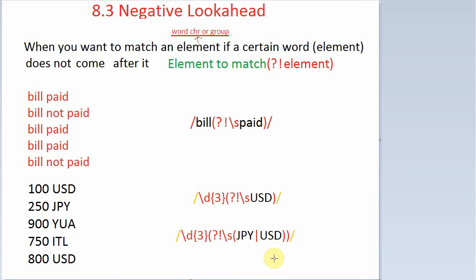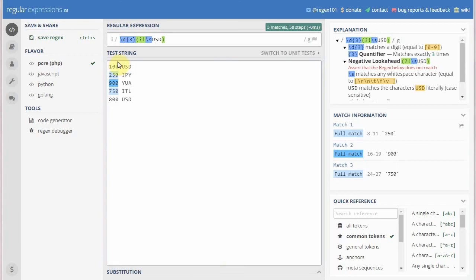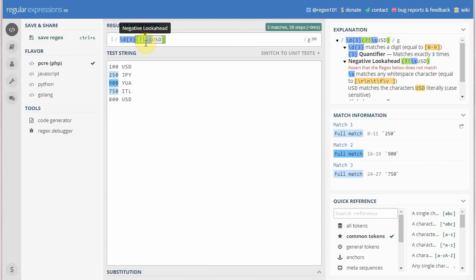This regex tells the engine: match all three-digit numbers that are not followed by 'USD' — match all three-digit numbers which don't have capital 'USD' after them. In the regex engine you can see: backslash d, quantifier three for a three-digit number, parenthesis, question mark, exclamation mark — negative lookahead — backslash s for space, and 'USD', the word which should not come after the number.